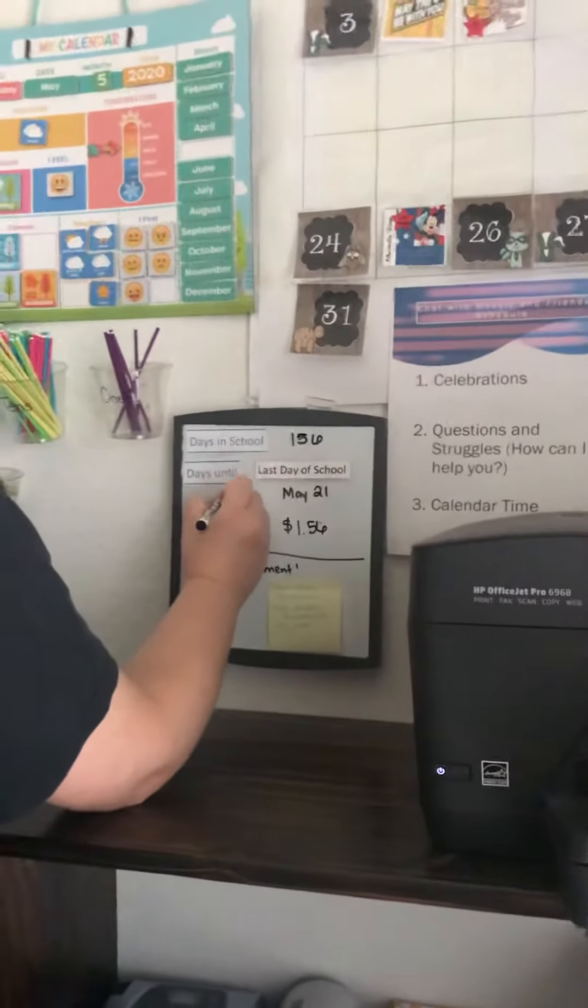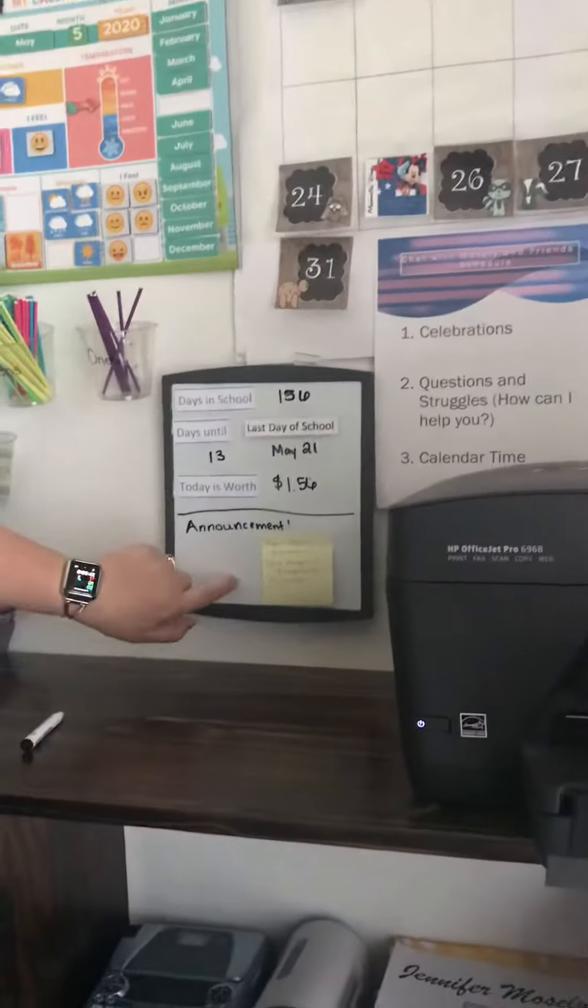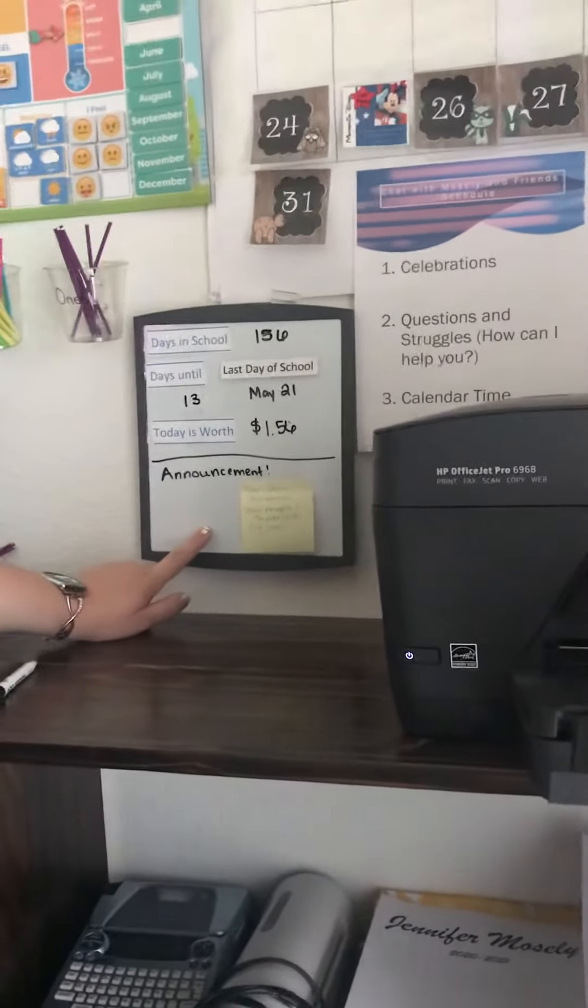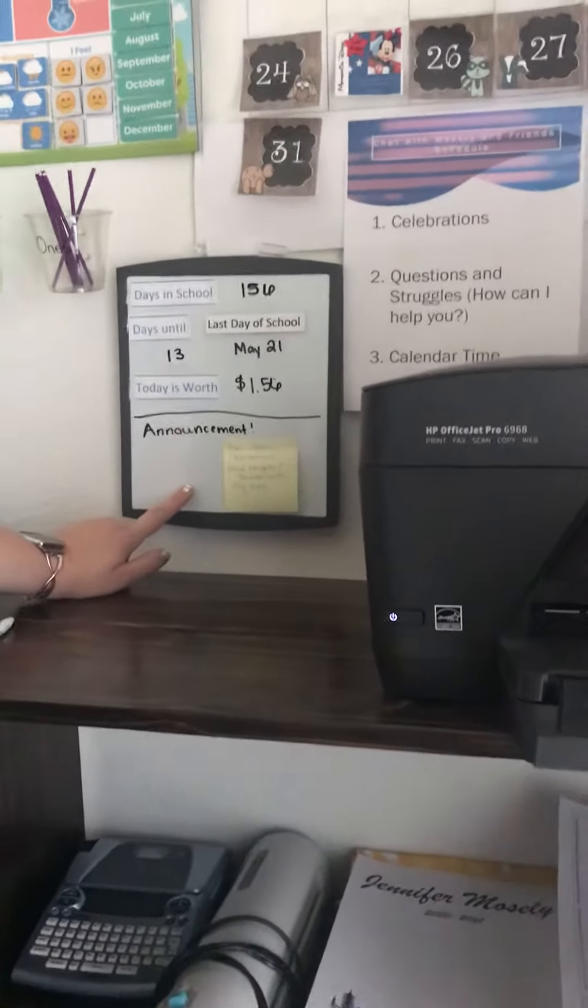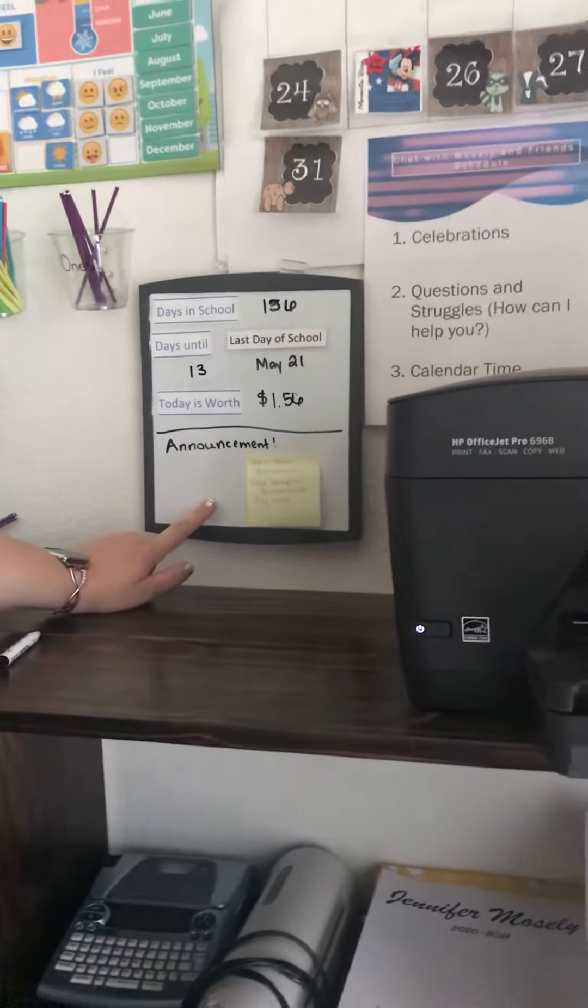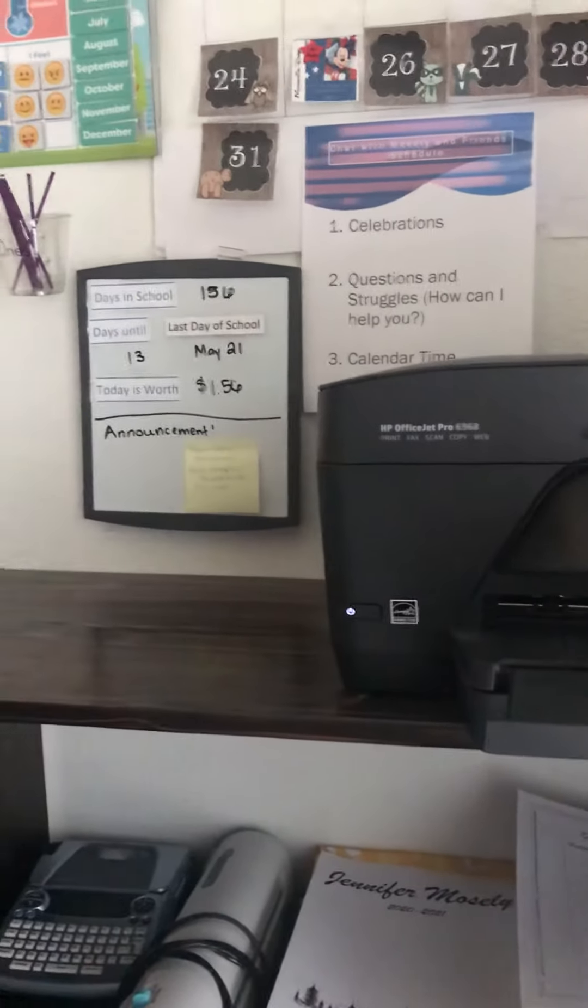We're now at 13 school days until May 21st, which is our last day of school. And our announcement - if you were with me yesterday, I told you that the flyover was today, but I sent an email to let everyone know that was a misprint. The flyover is tomorrow, which is Wednesday, between 11 and 12 is when the Blue Angels will fly over.